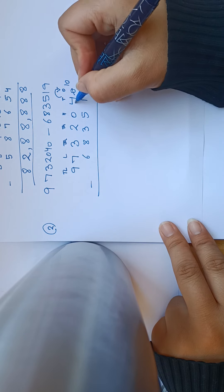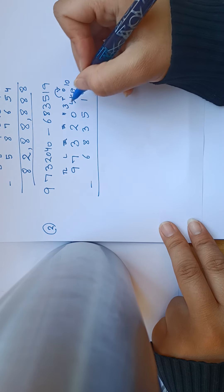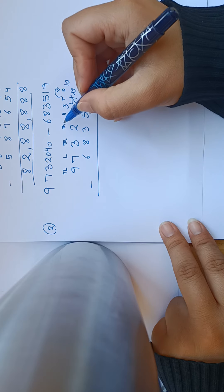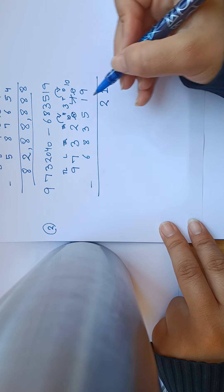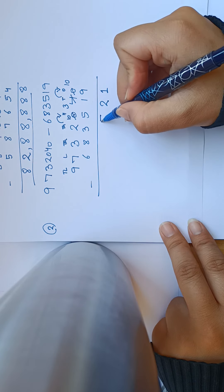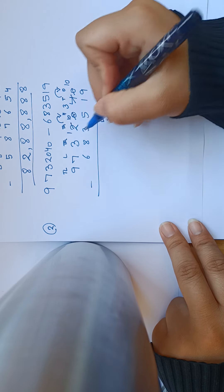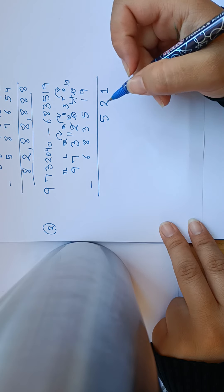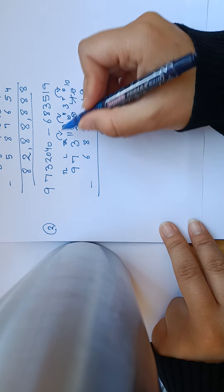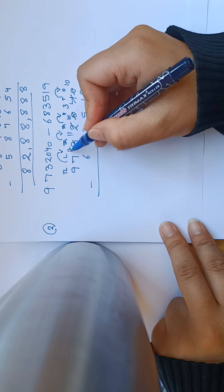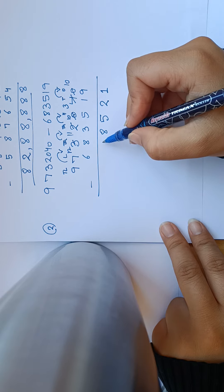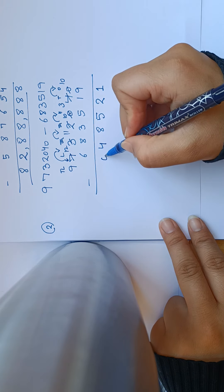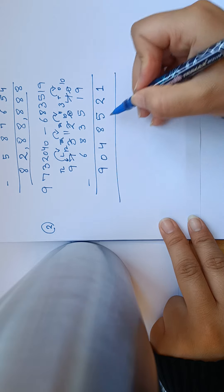10 में से 9 minus करेंगे — 1। इसको एक दिया, पीछे बचा 3। 3 में से 1 easily minus — 2। Hundreds पे 0 है, 5 है नीचे, minus नहीं हो सकता, thousands से borrow: 10 में से 5 — 5। बचा 1, 1 में से 3 नहीं हो सकता, ten thousands से borrow: 11 में से 3 — 8। बचा 2, 2 में से 8 नहीं हो सकता, lakh से borrow: 12 में से 8 — 4। बचा 6, 6 में से 6 — 0। 9 as it is। Answer: 90,48,521।